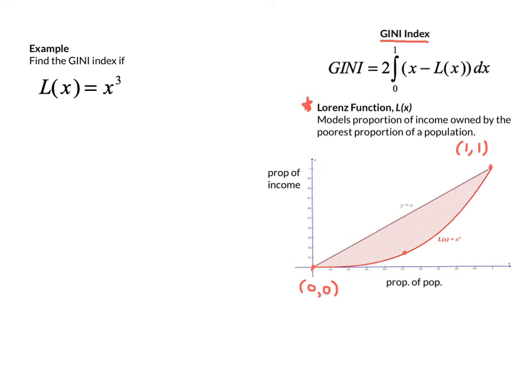That's our lower curve, and then we have y equals x. So our Gini value here is 2 times the integral from 0 to 1, x minus x cubed, dx.